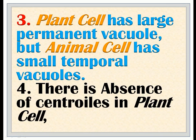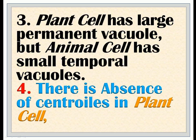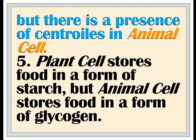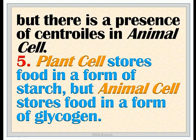3. Plant cell has a large permanent vacuole, but animal cell has small temporary vacuoles. 4. There is absence of centrioles in plant cell, but there is a presence of centrioles in animal cell. 5. Plant cell stores food in the form of starch, but animal cell stores food in the form of glycogen.